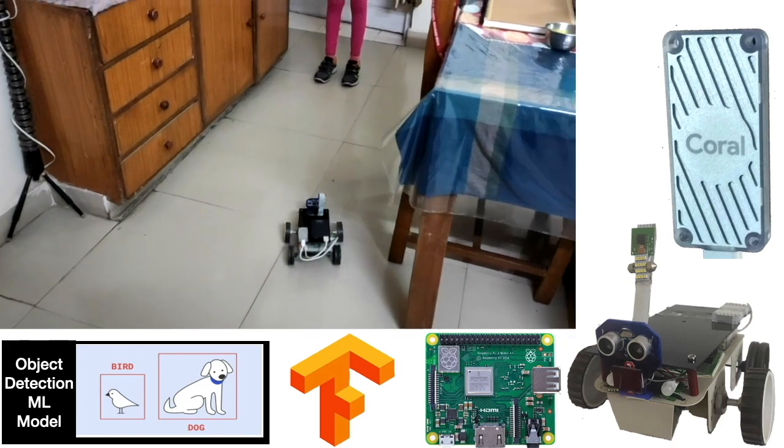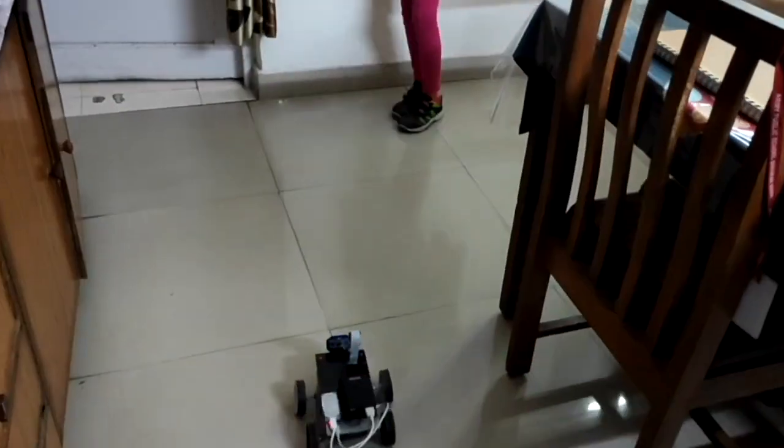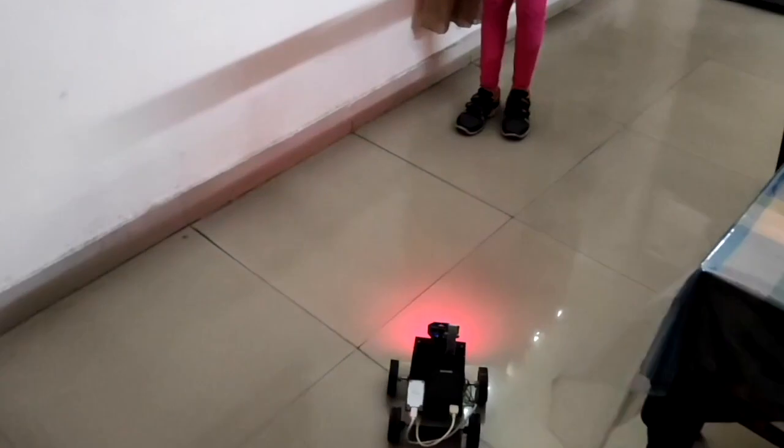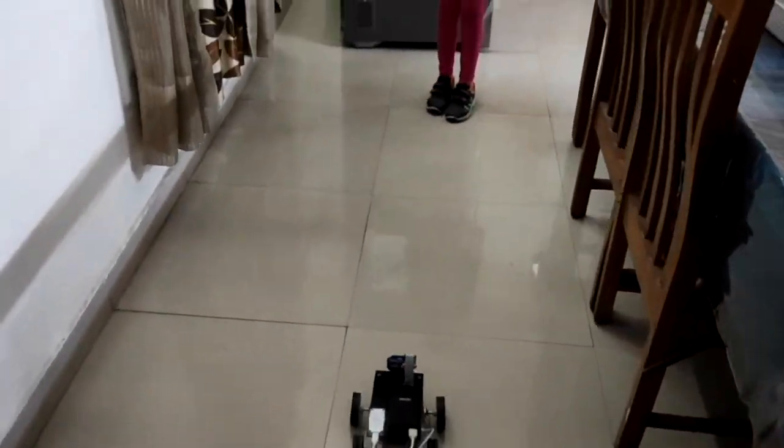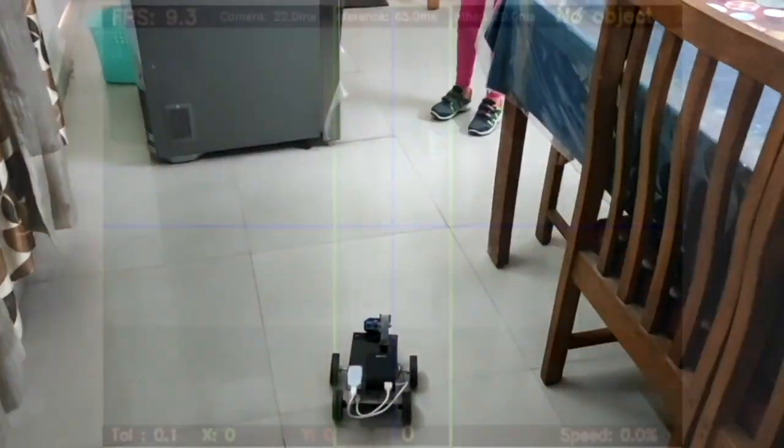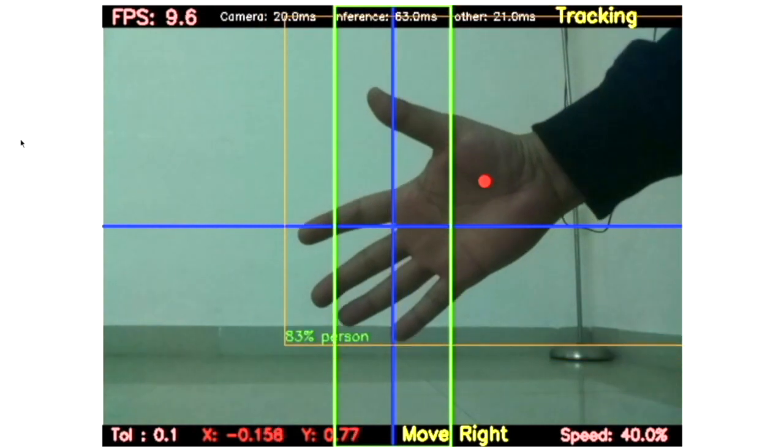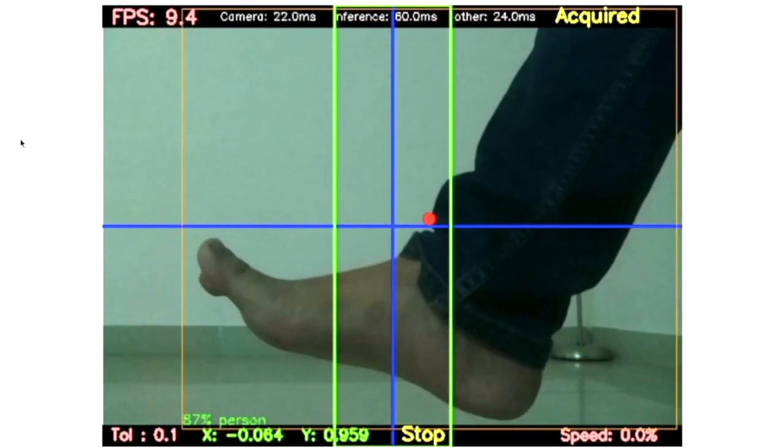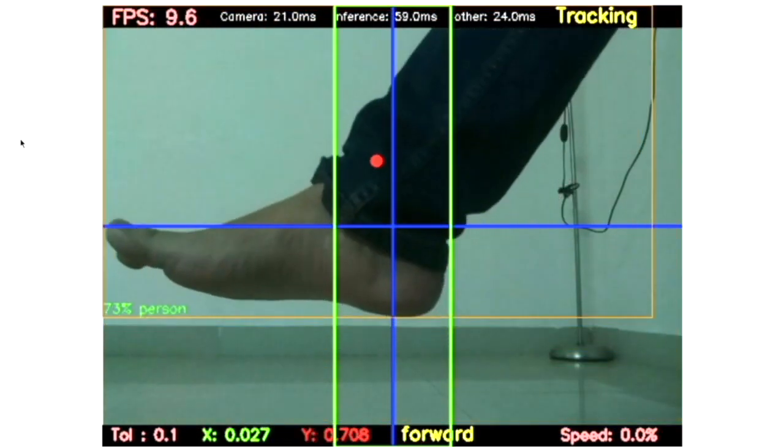And if the model detects a person in the frame, the Python code moves the robot to track it. The model is very accurate. No matter which part of the body you show to the camera, it gets correctly recognized as person.